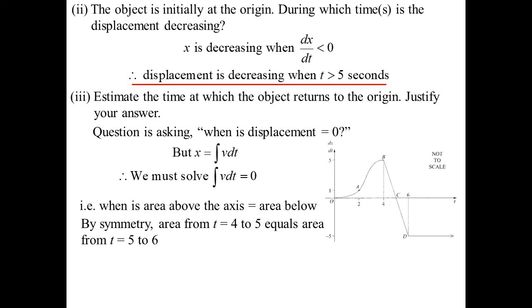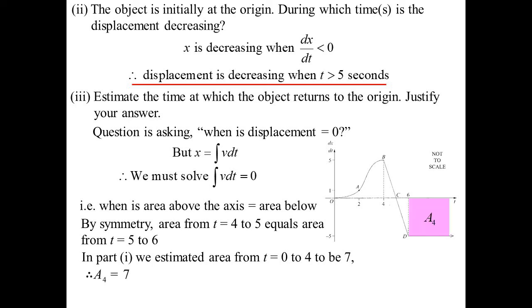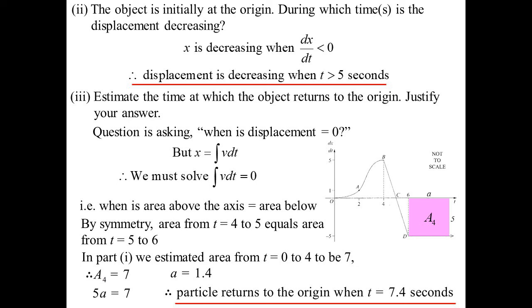From t = 4 to 6 the graph is symmetric, so those areas cancel. We need how far past t = 6 gives the same area as 0 to 4, which was 7. After t = 6 we have a straight line (rectangle) with height 5 — so 5 × width = 7, giving width = 1.4. Therefore the object returns to the origin at approximately t = 7.4 seconds.